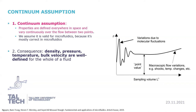Under the continuum assumption, observable properties such as density, pressure, temperature, and bulk velocity are taken as well defined at infinitesimal volume elements — small in scale compared to the characteristic length, but still large compared to the molecular length scale. So for the whole of our fluid, these properties are well defined and valid between any two points.